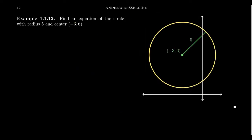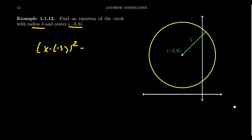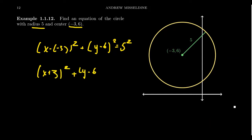We can go from the equation to the graph, but this process is also reversible. In another example, if we see that the center of the circle is negative three comma six and the radius is equal to five, we can write the equation. We get x minus negative three squared plus y minus six squared equals five squared, which cleans up to x plus three squared plus y minus six squared is equal to 25. This gives us the equation of the circle in standard form.